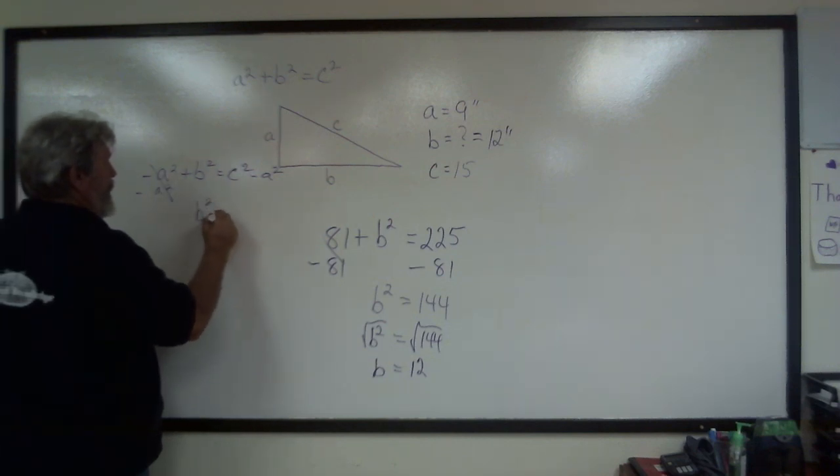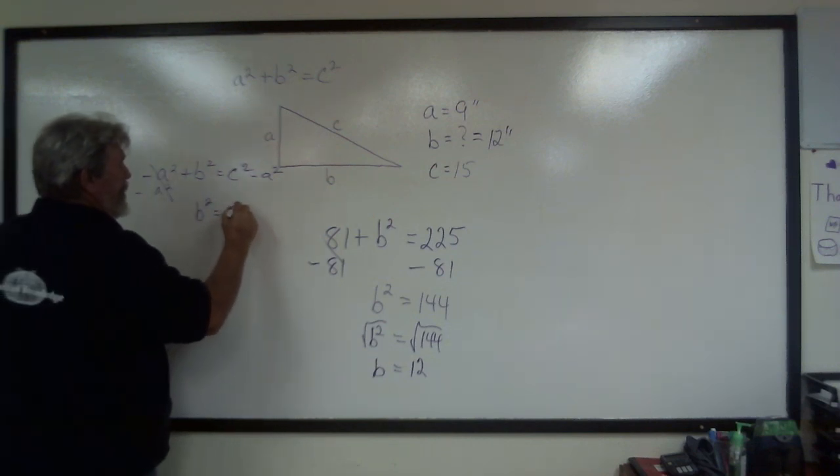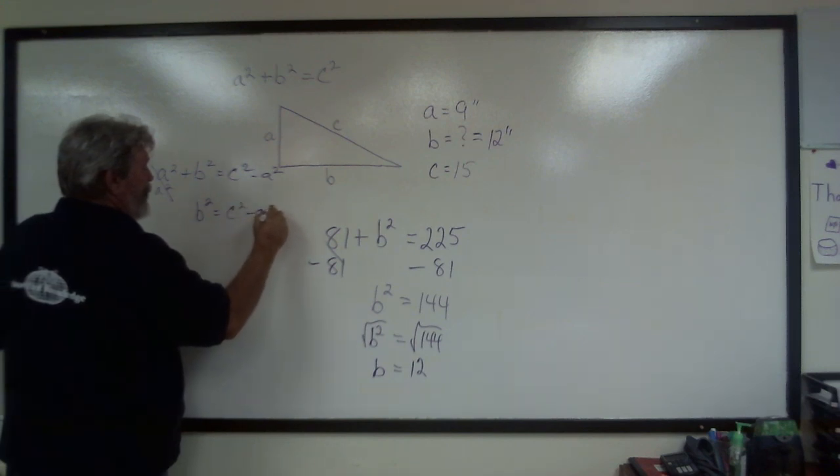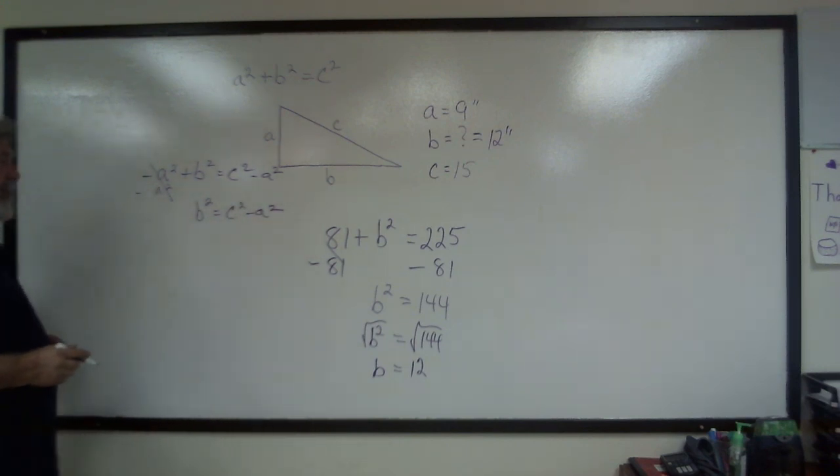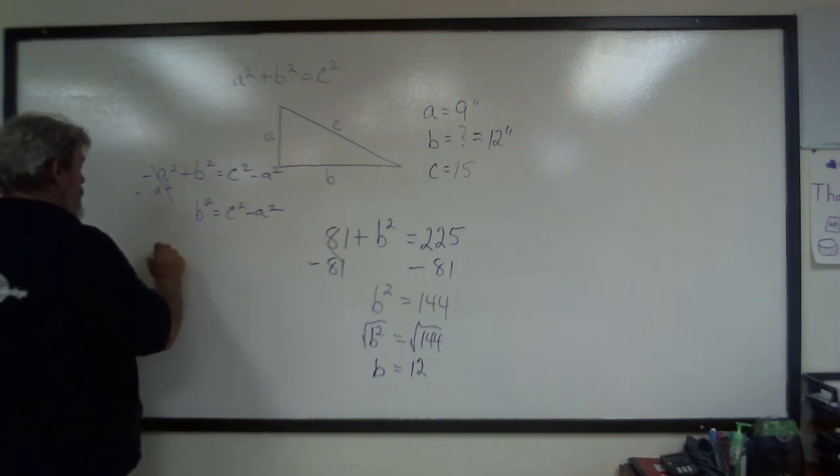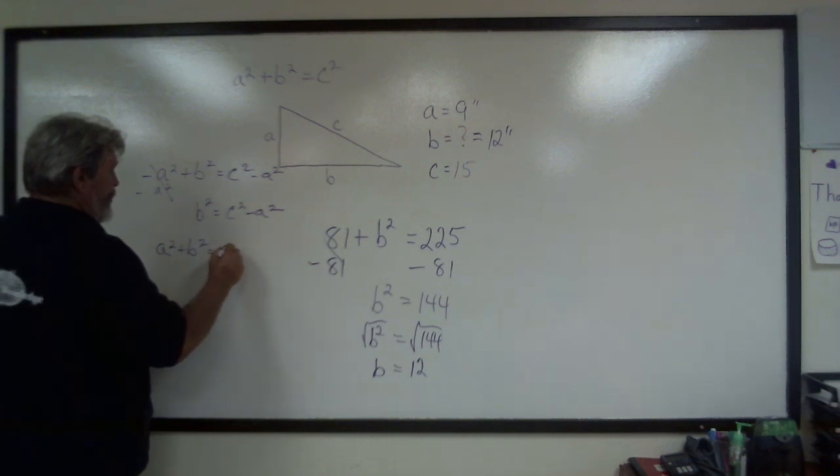It's going to leave me B squared equals C squared minus A squared.